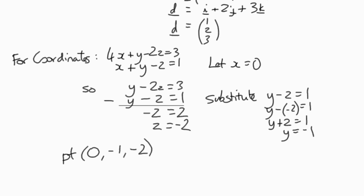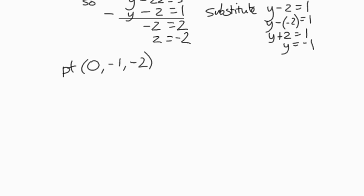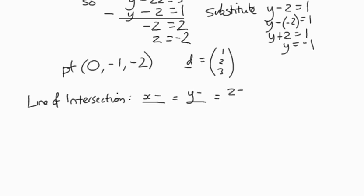We've decided nominally that our point is arbitrarily 0, and then if that's 0, we've got -1 and -2. You could choose 0 for any of x, y, and z. You could technically choose any value, 1, 2, or 3. It doesn't matter. 0 obviously makes it easier to work with. We've got a point on the line, we've got a direction vector which we said was 1, 2, 3, which means that our line of intersection is x/1 = (y+1)/2 = (z+2)/3. There is the equation of our line.